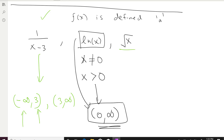For square root x: you cannot take the square root of a negative number, so x must be greater than or equal to 0. At x = 0, the square root of 0 is 0, so that's fine. Therefore the interval is [0, ∞) with a closed bracket at 0 meaning 0 is included. So the approach in our course is: look at the function, detect the bad points where it is not defined, remove those points, and construct intervals where the function is continuous.